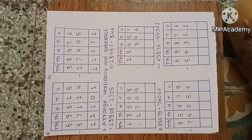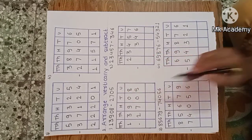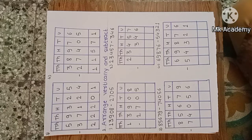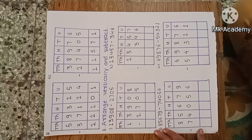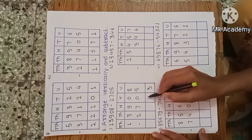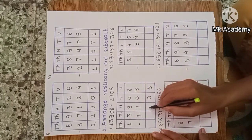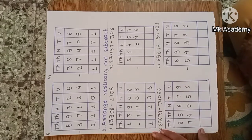Now see the next question: arrange vertically and subtract. We have to arrange the subtraction vertically and then solve it. First example: thirteen thousand nine hundred and eight minus two thousand seven hundred and five. We do the vertical arrangement first, then subtract. Unit place: 8 minus 5, three remaining. Tens: 0 minus 0, zero. Hundreds: 9 minus 7, two remaining. Thousands: 3 minus 2, one remaining. Ten thousands: the answer is eleven thousand two hundred and three.